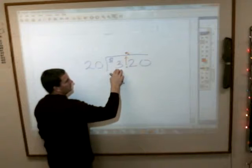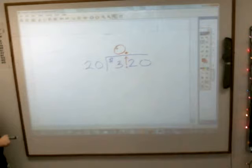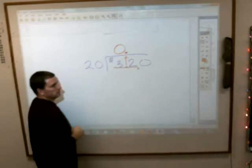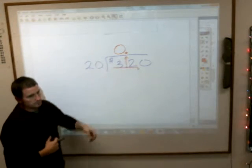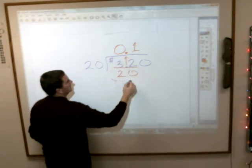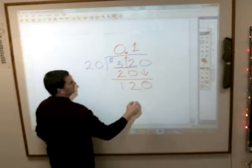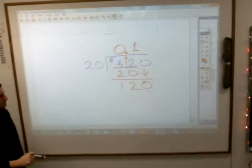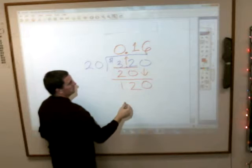And then we'll do the same thing. 20 doesn't go into 3. So in this case, you can put a 0 there, just because we can put 0s in front of decimals. How many times does 20 go into 32? Again, if you knock off the front, how many times does 2 go into 3? Once. One time. 1 times 20 is 20. Subtract. Bring down. How many times will 20 go into 120? 6. 6 times, because 2 goes into 12, 6 times.